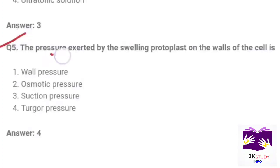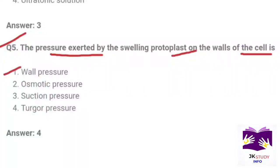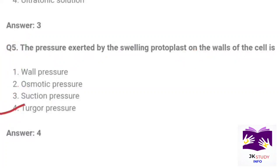Next question: The pressure exerted by a swelling protoplast on the walls of the cell is called? Option 1: wall pressure. Option 2: osmotic pressure. Option 3: suction pressure. Option 4: turgor pressure. Correct option is Part 4: turgor pressure.